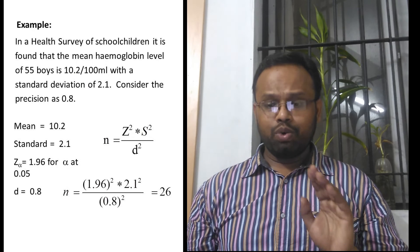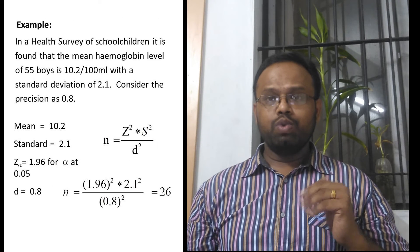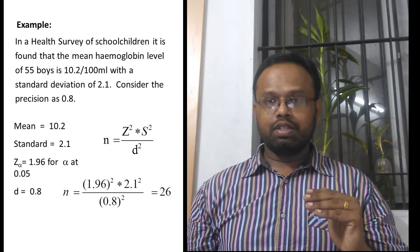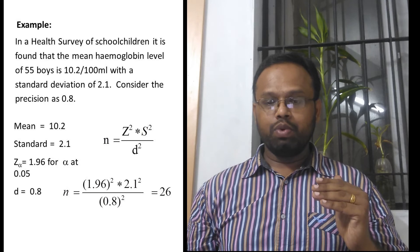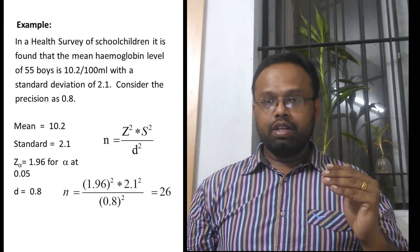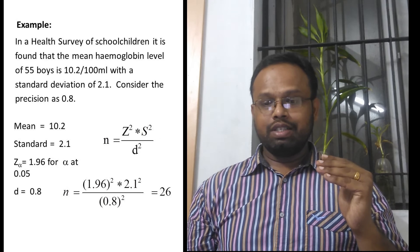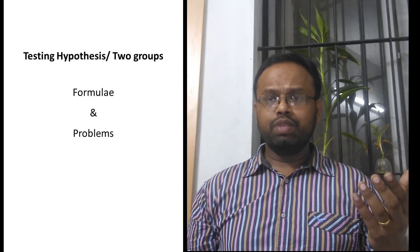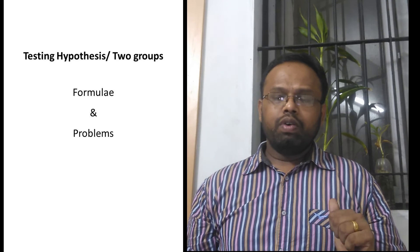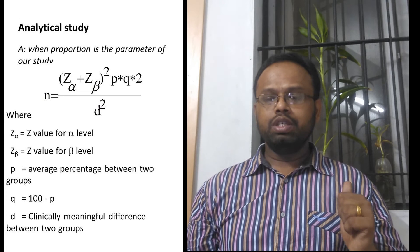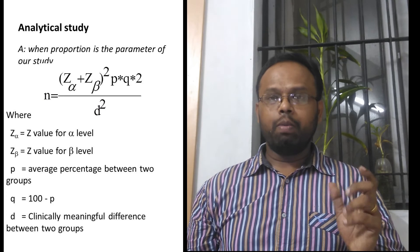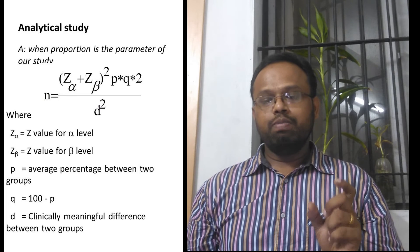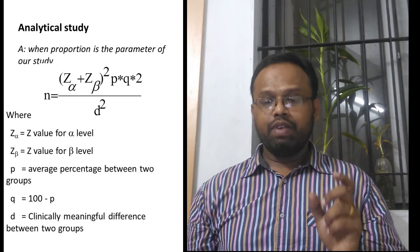There is one more example for calculating sample size when estimating the mean, which you can review with the slide. Now we are moving on to testing hypotheses between two groups. When a proportion is compared between one group and another, the formula is: n = (z_alpha + z_beta)² × pq / d².